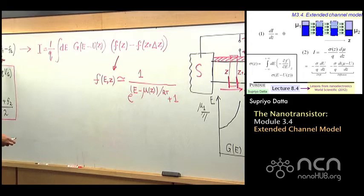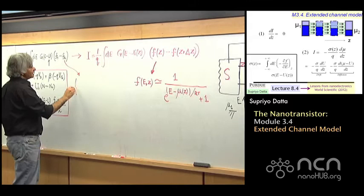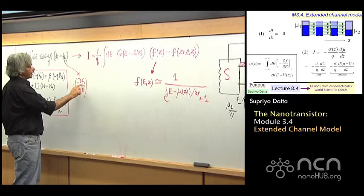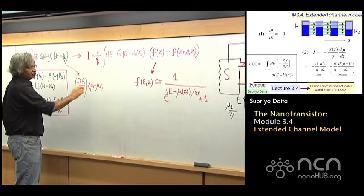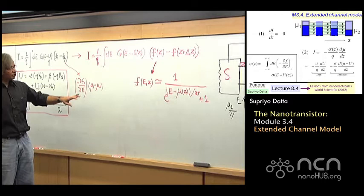So if you make that assumption, then as we did before — if you remember, we took F1 minus F2 and replaced it with minus dF0/dE, where F0 was like the Fermi function that was like the average between 1 and 2, and then multiplied by mu 1 minus mu 2, which was QV. This is what we had done earlier.